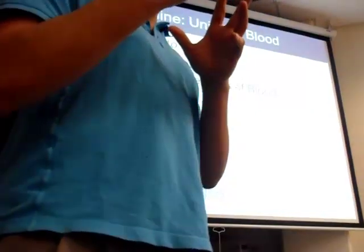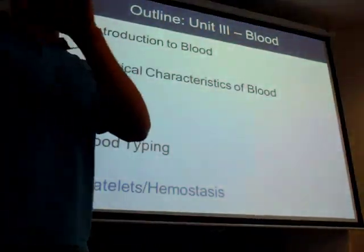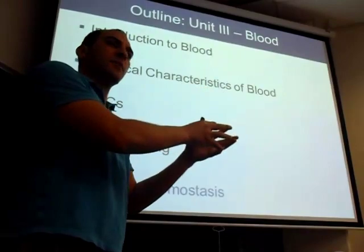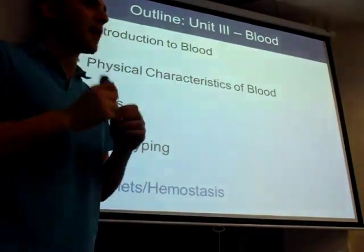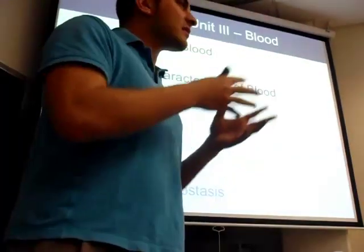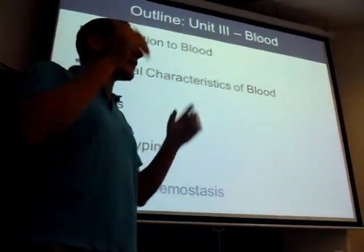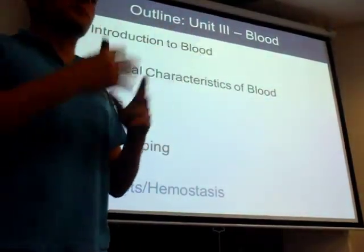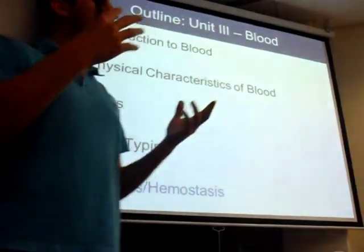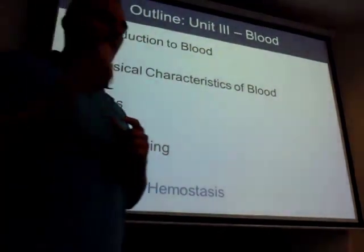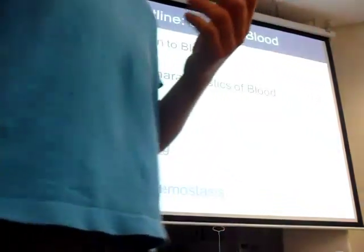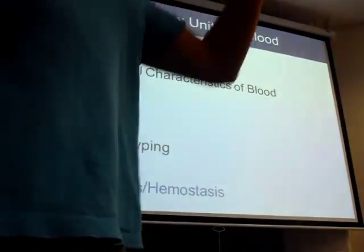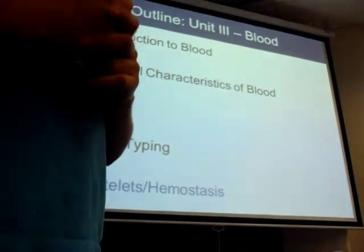Transfusion-wise, O has none of the antigens. If it goes over to type A, type A has anti-B antibody. O comes over not wearing any antigens — nothing to be hated on, so it's fine. Whether anti-A or anti-B is there, it won't be attacked at all. I recommend before the test: take all the blood types, start with A — can you donate to A, B, AB, O? Do that with each of them.